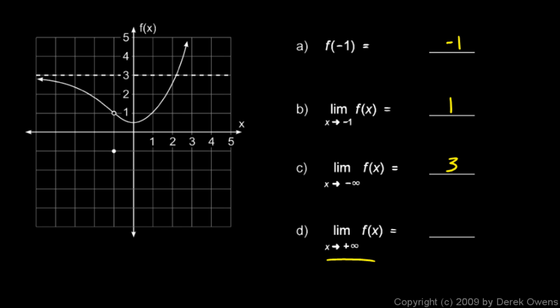And then the limit as x approaches positive infinity. This curve here, there's no asymptote drawn. So even though this curve is getting steeper and steeper, it still goes infinitely far to the right. As x gets big, this thing zooms up. So the limit as x approaches positive infinity is positive infinity. And you can put a plus sign there if you want to. Positive infinity.